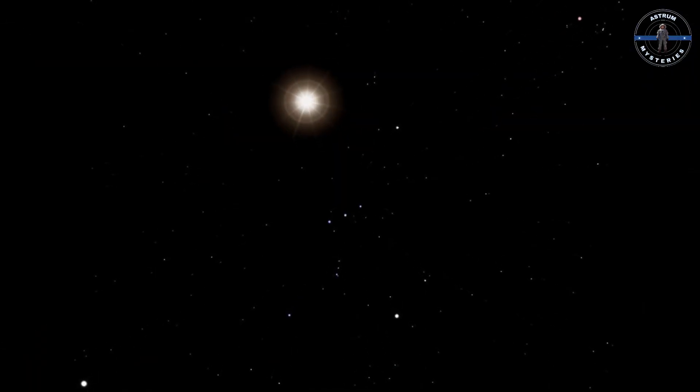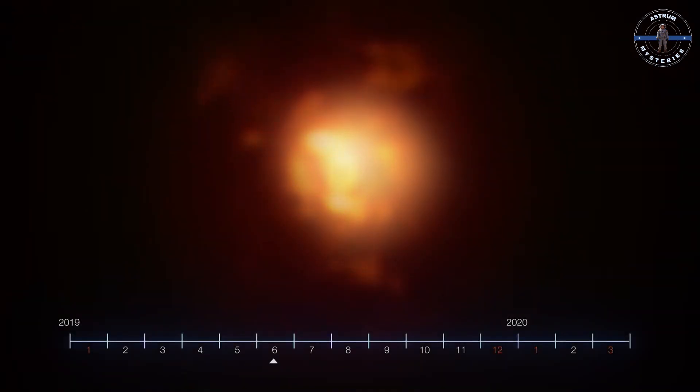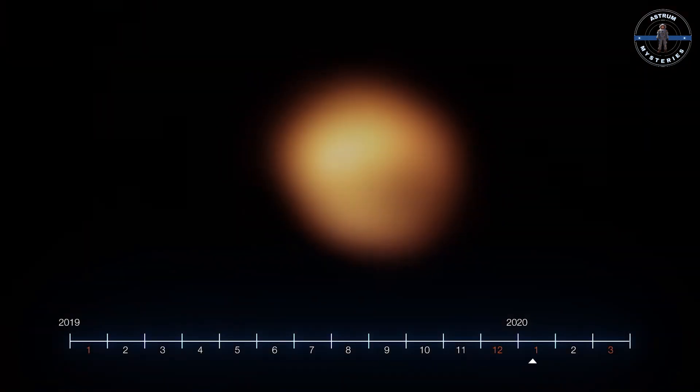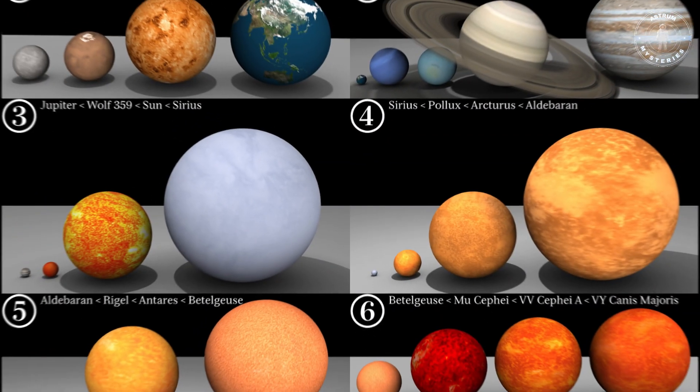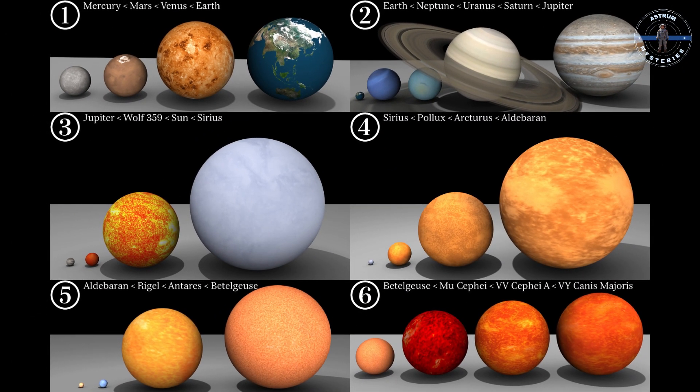Betelgeuse is no ordinary star. It's a red supergiant, a stellar Titan over 700 times the size of our Sun. If placed at the center of our solar system, it would engulf Mercury, Venus, Earth, Mars, and even Jupiter. But what makes this cosmic monster so special?